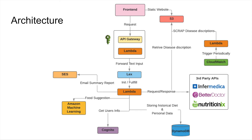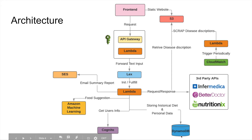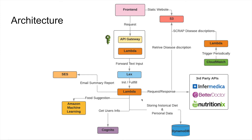We use three third-party APIs. One is Infermedica, for identifying symptoms and diagnosing the right disease. Second is Better Doctor, for finding the closest available doctor for that disease. Third is NutritionX, used for the nutrition portion of the project. The Lambda functions talk to these APIs to get information. We also store historical data in DynamoDB, do food suggestions using Amazon Machine Learning, and send email reports using Amazon Simple Email Service.